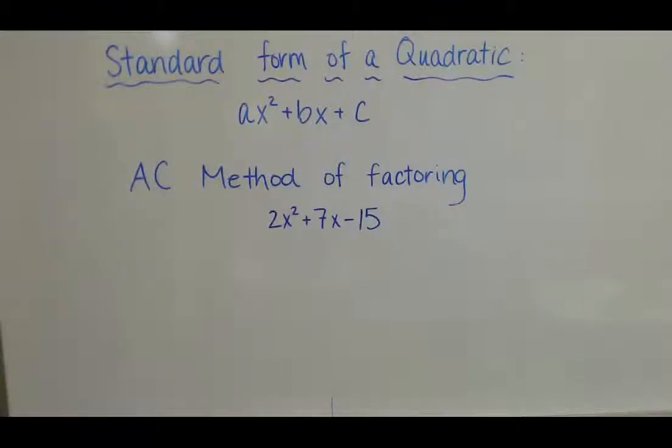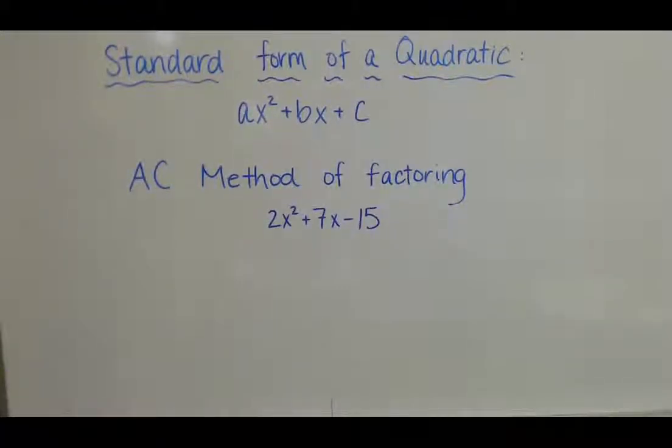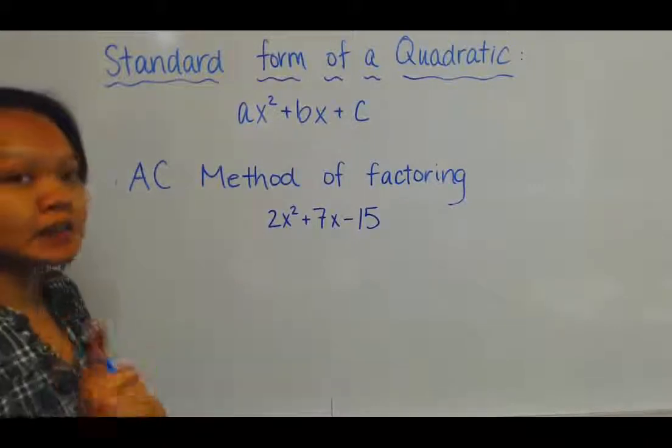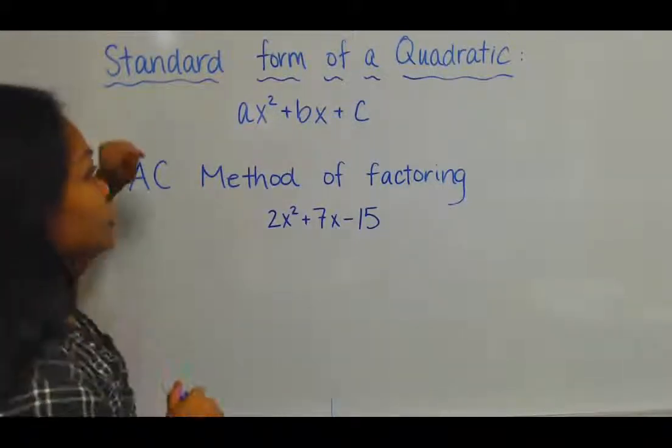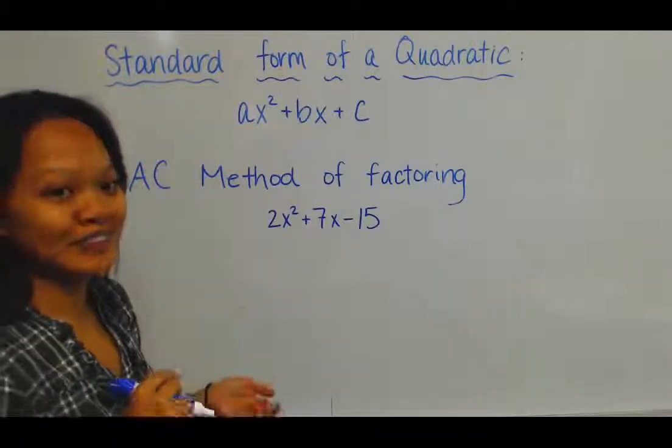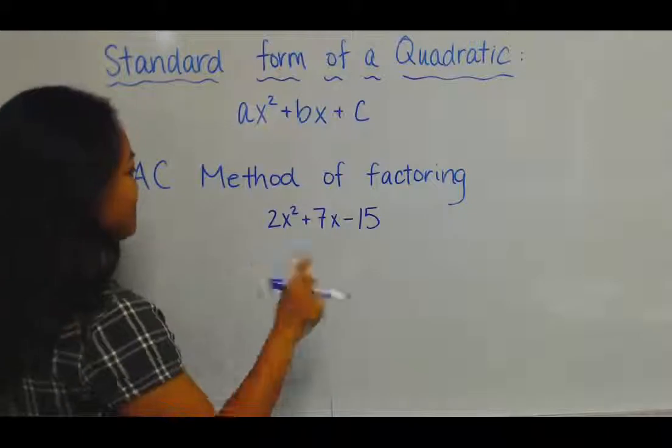Today we are covering the AC method of factoring quadratics, and here we have 2x² + 7x - 15. Keep in mind that the standard form of a quadratic is ax² + bx + c, which is how we will determine the AC part of the method.